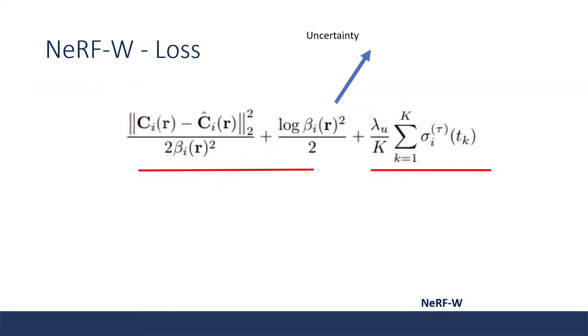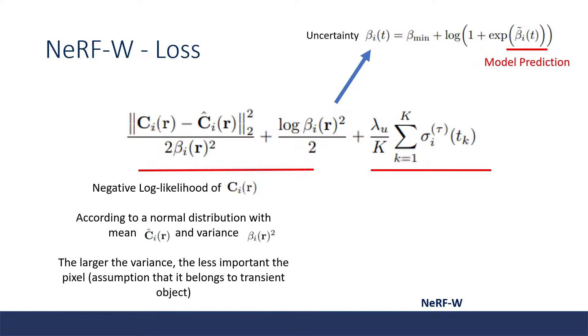For the fine loss, NeRF-W modulates the loss using the uncertainty beta_i. Beta_i is calculated using a minimum beta which is added to the model predicted additional uncertainty. The first two terms of this loss is the negative log likelihood of the ground truth color according to a normal distribution with the mean being our predicted color and variance the uncertainty. The larger the uncertainty, the less important the pixel is with the assumption that it belongs to a transient object. Lastly, there is a regularization term for the transient density so that it does not explain away static phenomena.